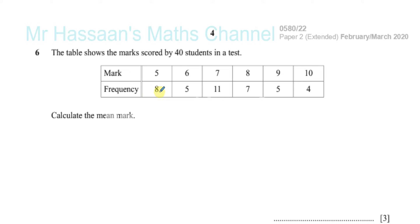What does this mean? This is a frequency table. What it means is there were eight students who got a mark of five, and five students got a mark of six, and eleven students got a mark of seven, and so on and so forth.